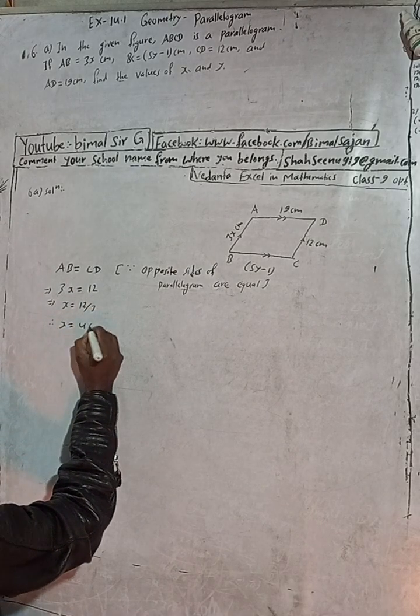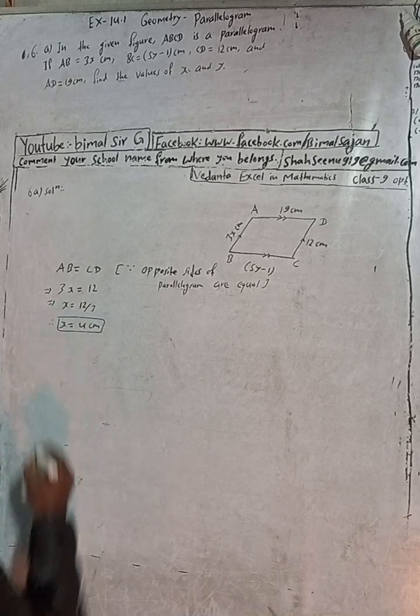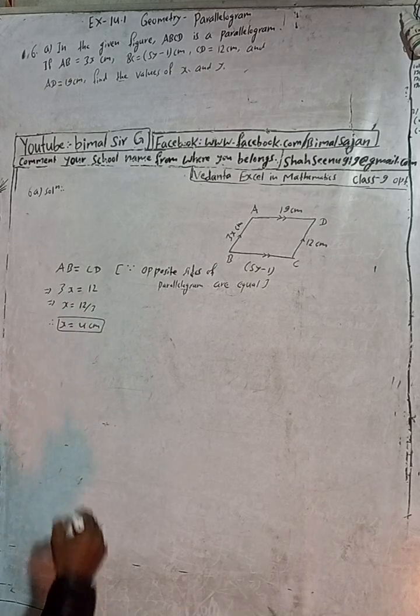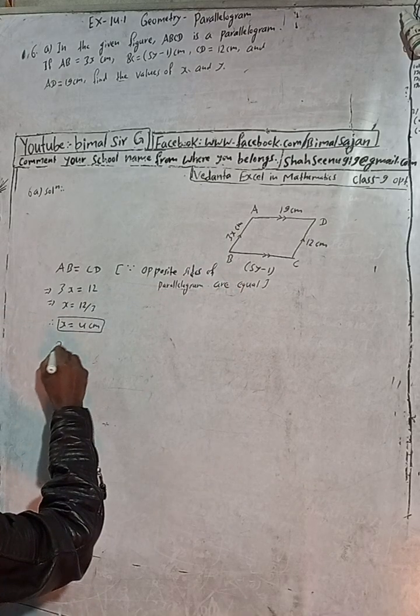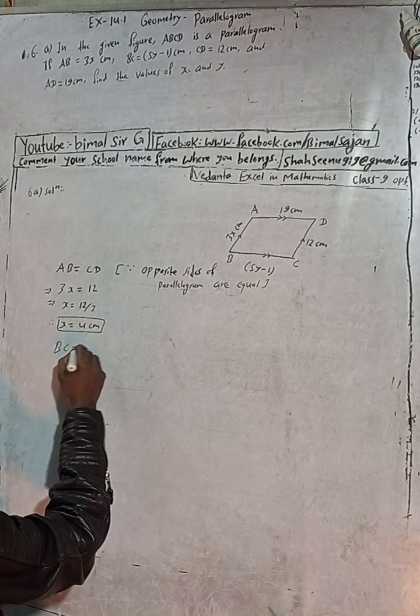This implies x is equal to 12 divided by 3. Take this side. Therefore x is equal to 4cm.